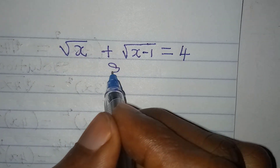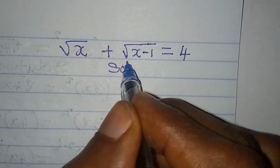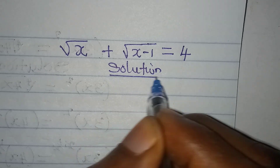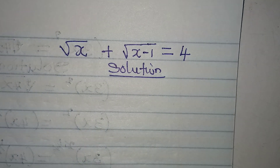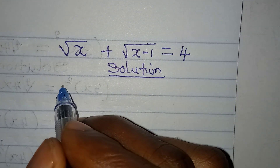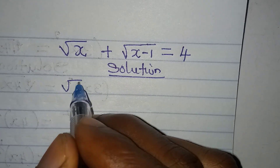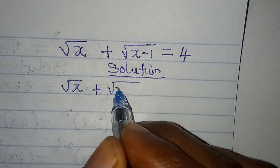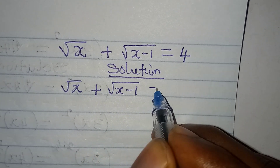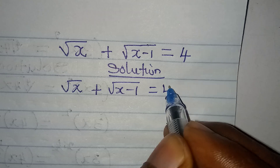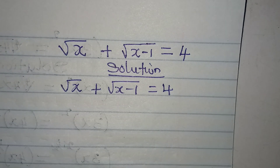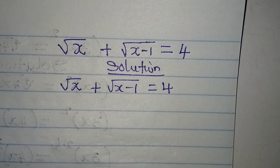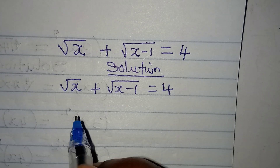Hello everyone, let's provide the solution to this problem very quickly. We have square root of x plus square root of x minus 1 equals 4. The first step we will take is taking this to the other side.